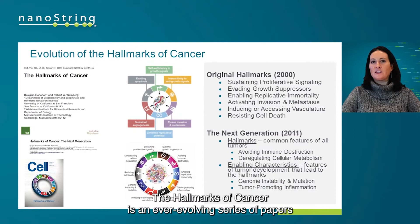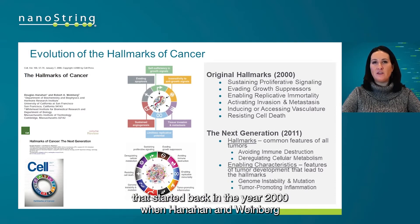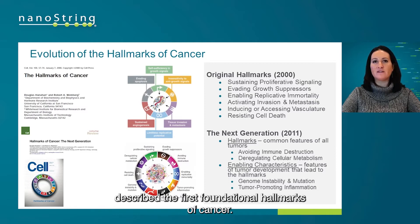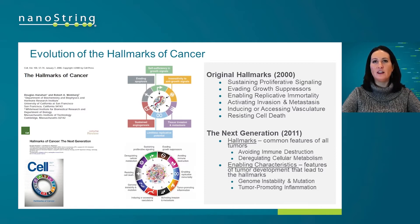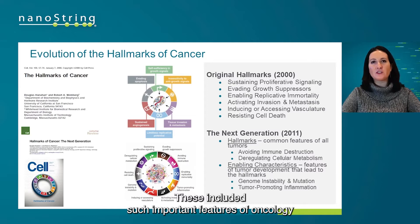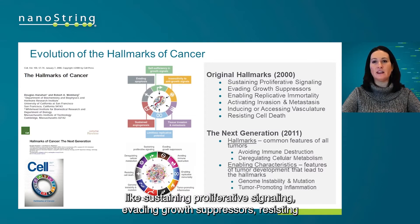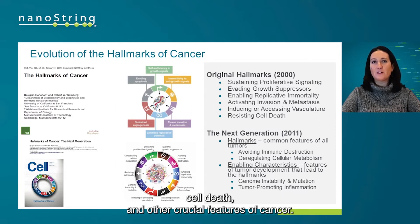The Hallmarks of Cancer is an ever-evolving series of papers that started back in the year 2000 when Hanahan and Weinberg described the first foundational hallmarks of cancer. These included such important features of oncology like sustaining proliferative signaling and evading growth suppressors, resisting cell death, and other crucial features of cancer.